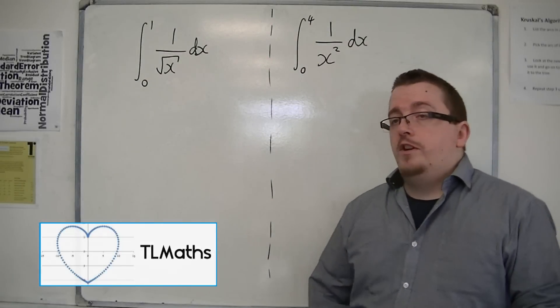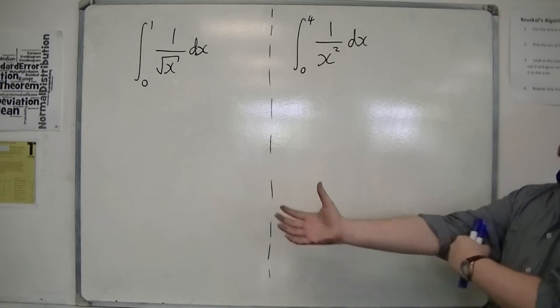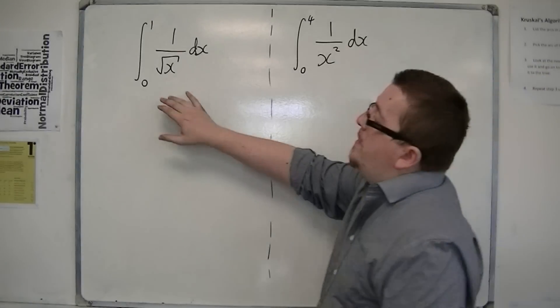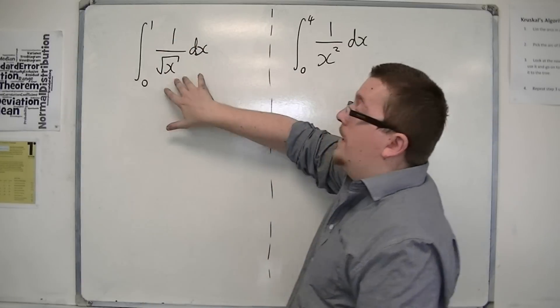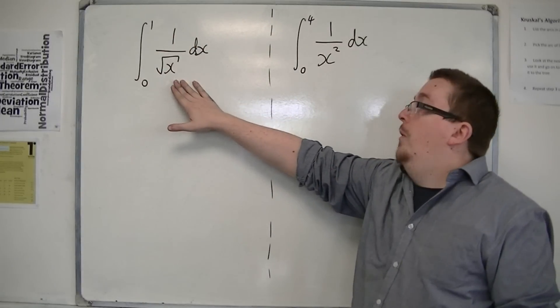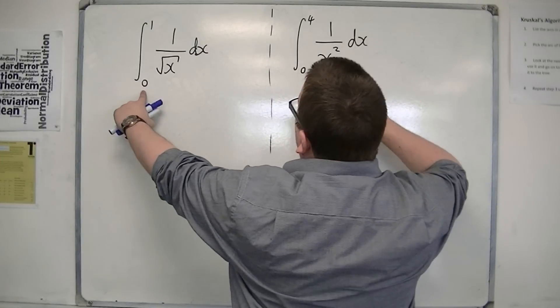So in this video, I'm going to show you how to deal with the other type of improper integral. The one where the limits on the integral have a conflict with the equation that we're looking at. So for example, in both of these, when x is 0